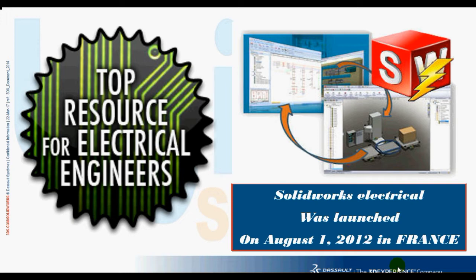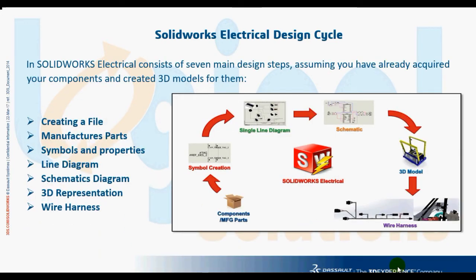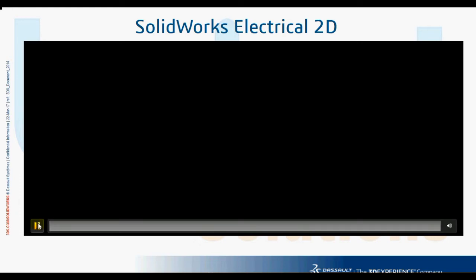SOLIDWORKS ELECTRICAL consists of seven main design steps. Creating a file covers how a file is created in the project manager. Manufacturer's part covers how we associate components to manufacturing parts. Symbol and properties cover how we can drag and drop symbols in 2D schematic. This includes line diagram, schematic diagram, 3D representation, and wire harness. By going through these steps, SOLIDWORKS ELECTRICAL will help you bring your electrical design ideas to life.